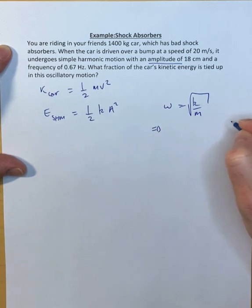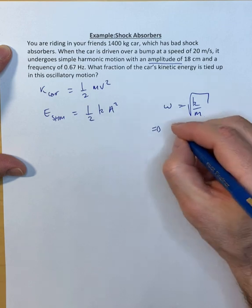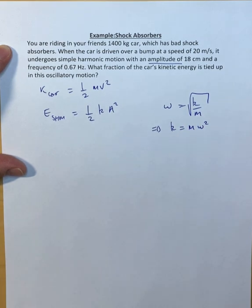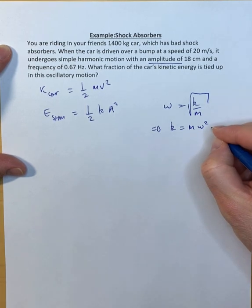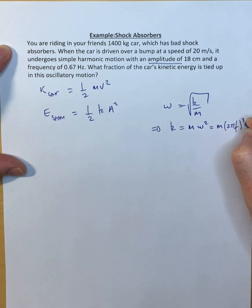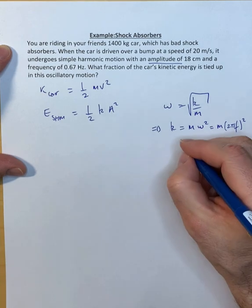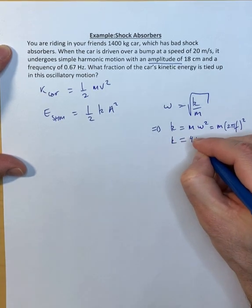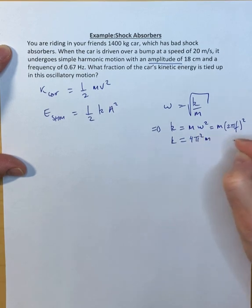If we square both sides, we find that k equals m omega squared. The mass we know. We don't know the angular frequency, but we do know the regular frequency, and of course the two are related. This is m times 2 pi f squared, or we can replace k by 4 pi squared m f squared.